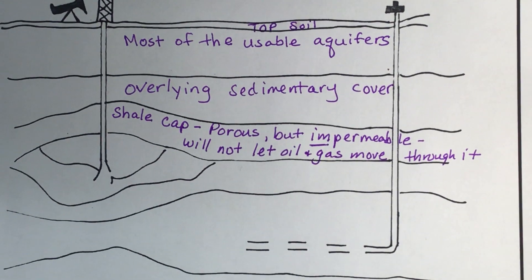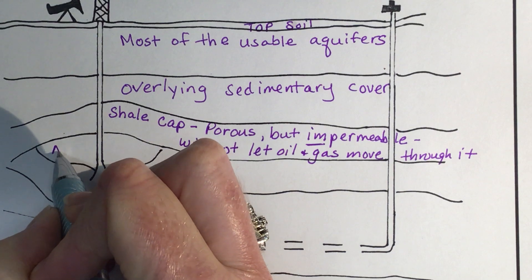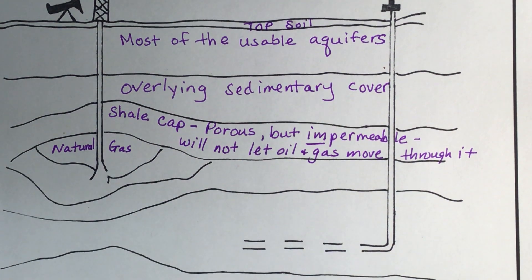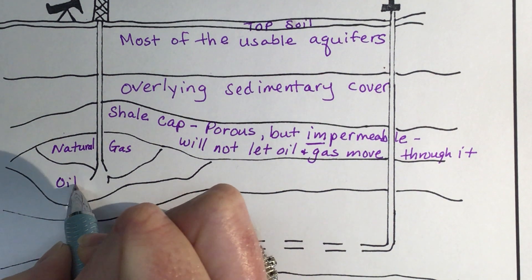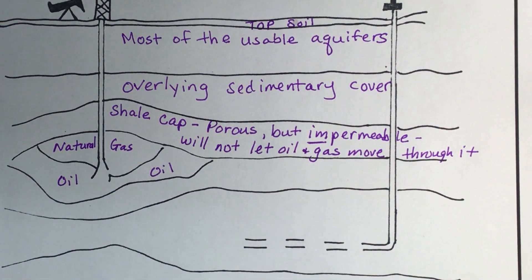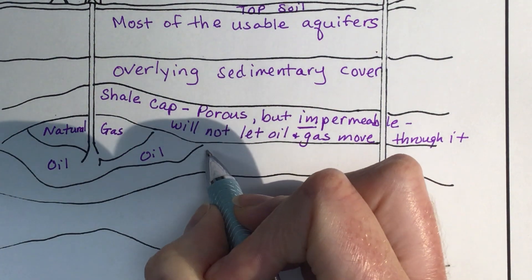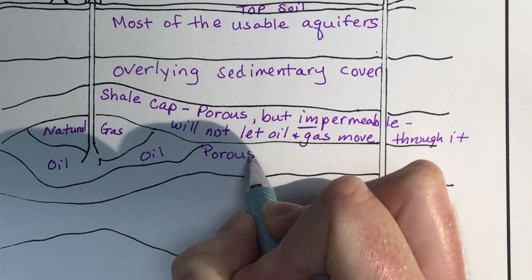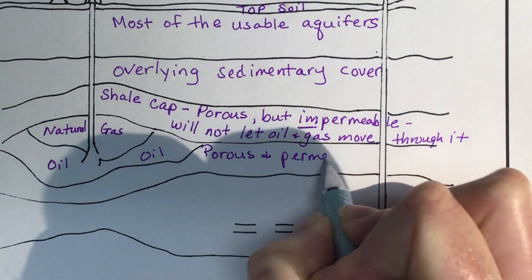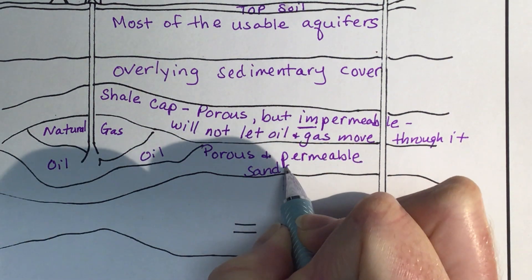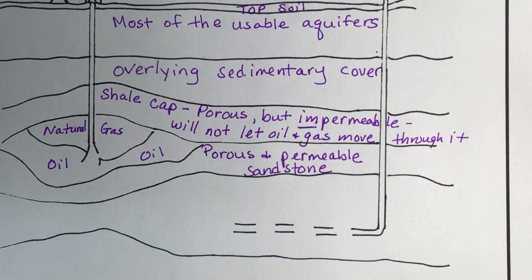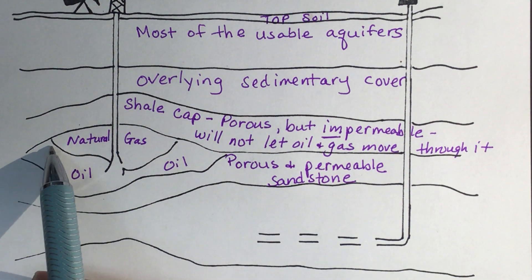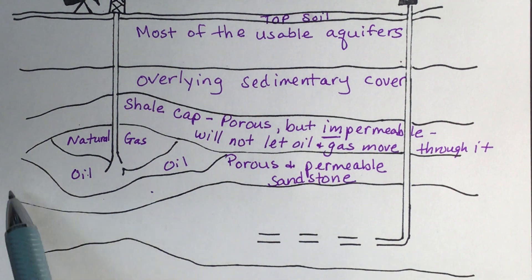Now let's talk about where our oil and gas are. In this layer we have natural gas, and below it we have oil. Below that we have sandstone. The sandstone is porous and permeable. The natural gas, oil, and sandstone are all one layer — the oil and natural gas are found within the sandstone.